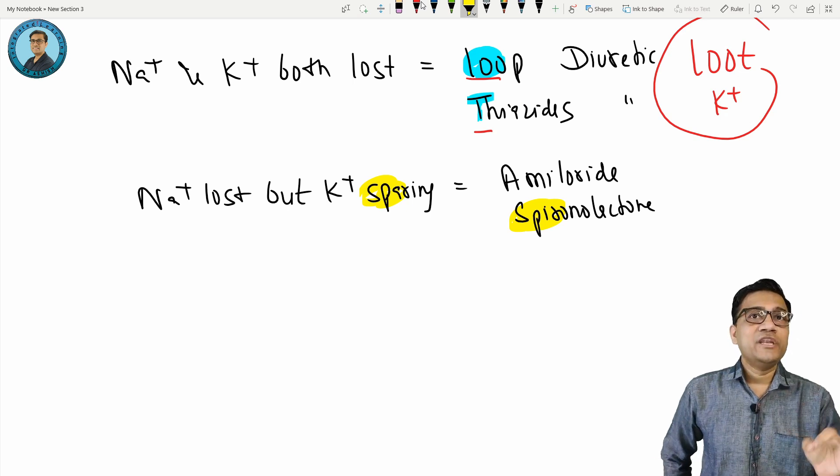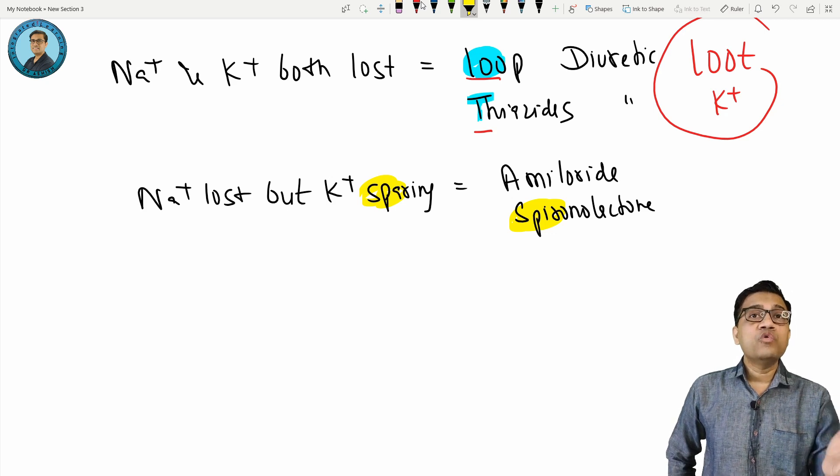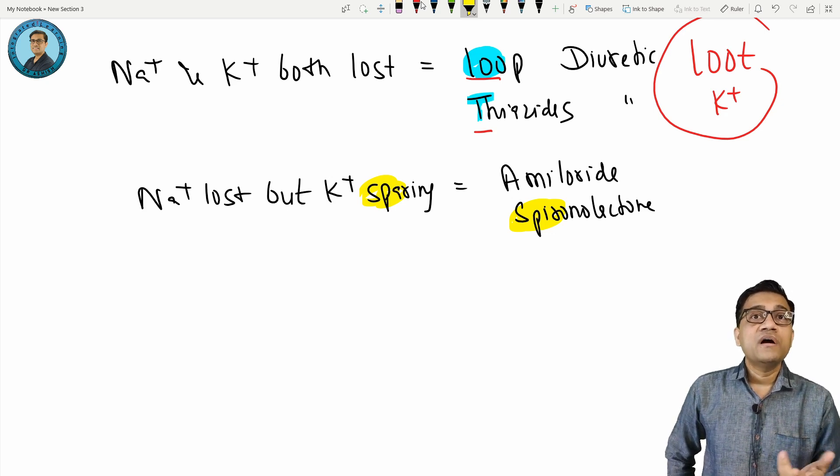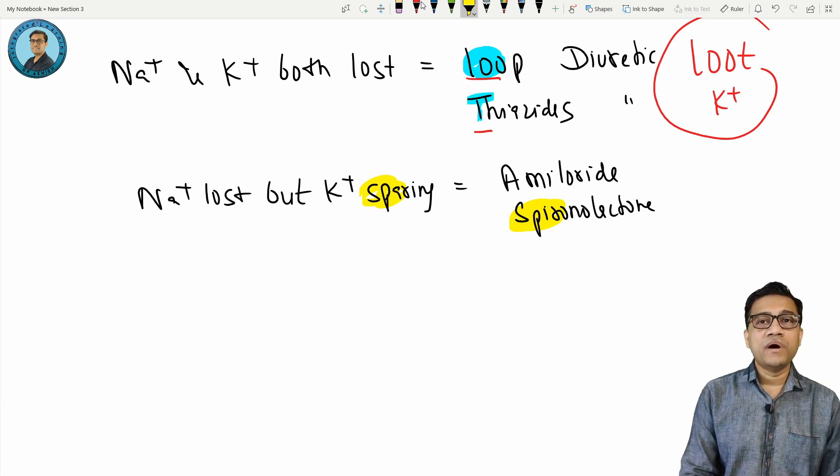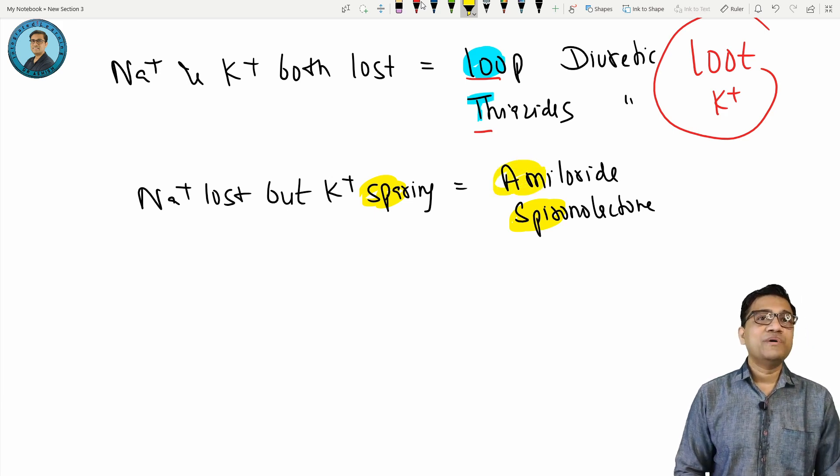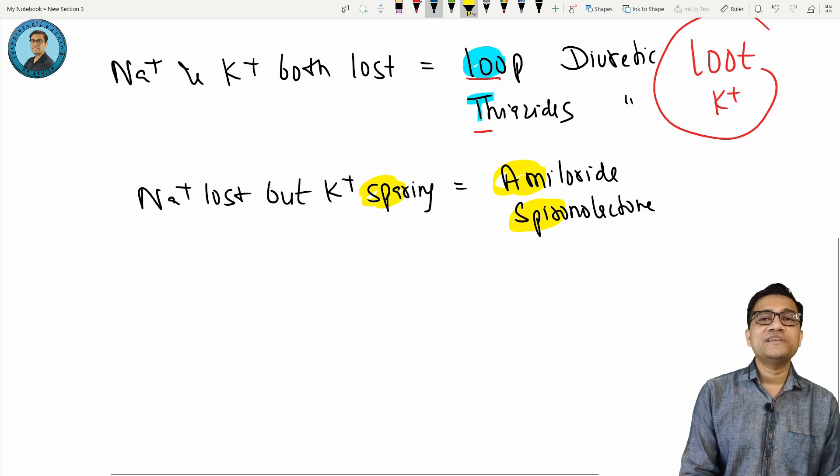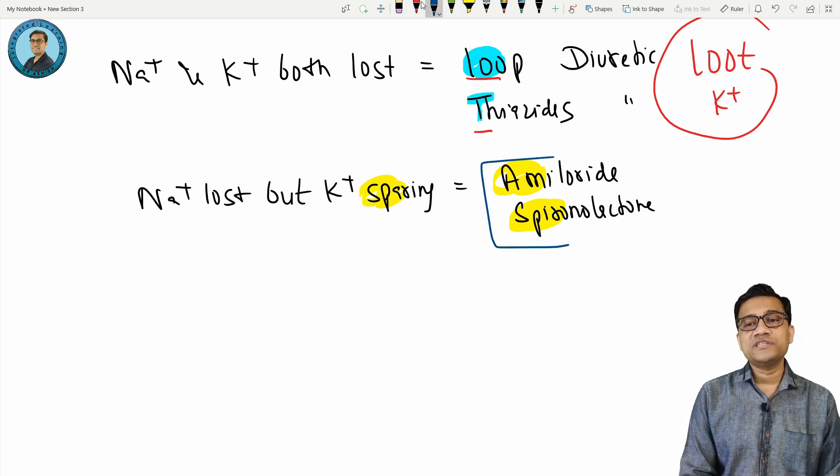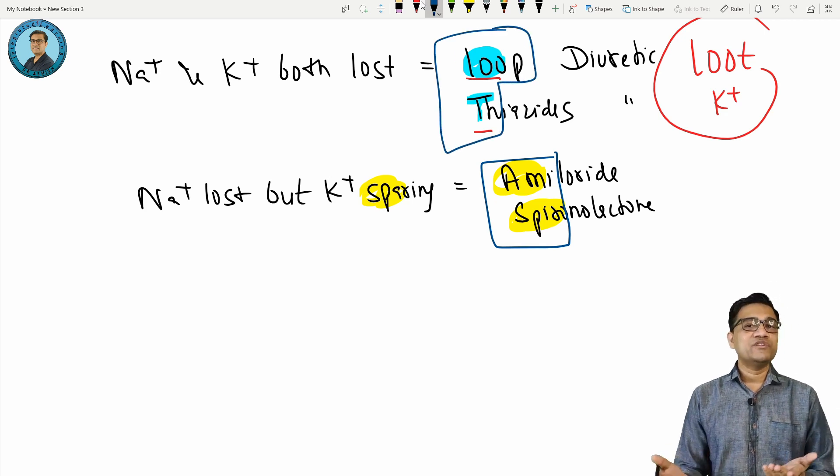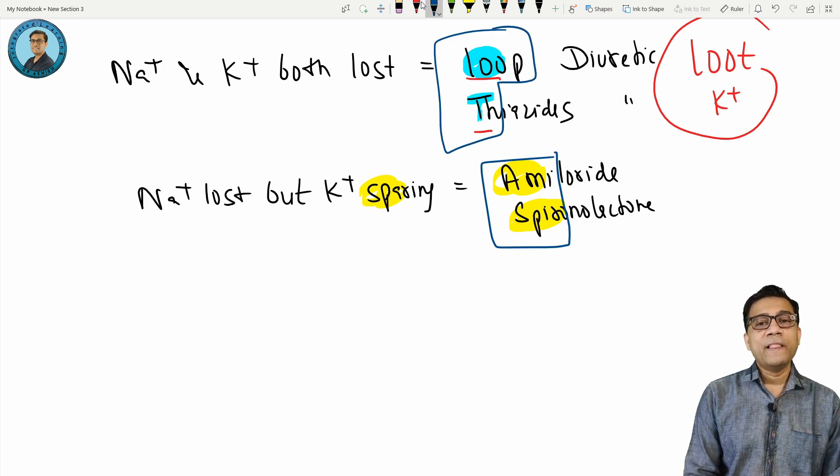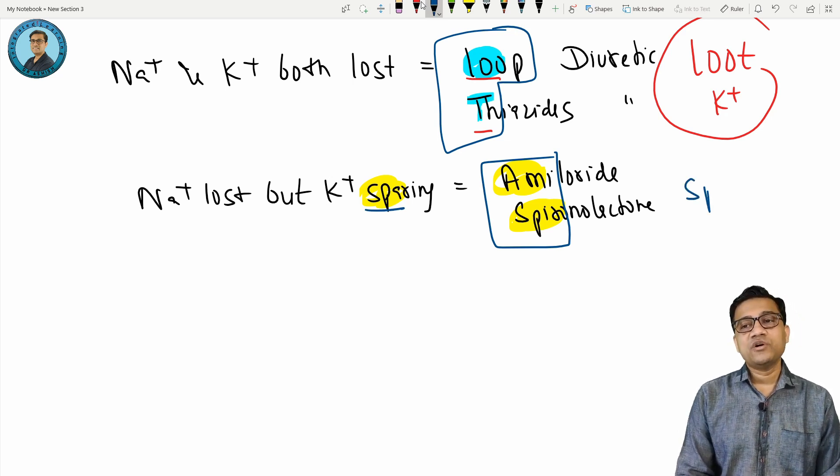When you are in trouble or your father is angry, who will save you? Mother. And what do you call? Amma spare me, Amma bachalo, Ma bachalo. So remember - Ammi spare me, Ammi spare is the mnemonic for this. Ammi spare and loot is the mnemonic. They are looting and sparing. Ammi spare means spare the potassium. So they spare or save potassium.